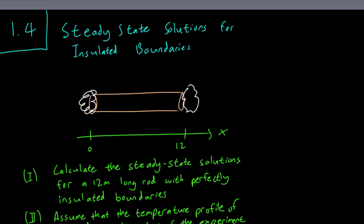Hello class, this is section 1.4 and in this video we are going to discuss steady state solutions for insulated boundaries. So this time we have again an iron rod, we say it's 12 meters long, and we've stuck some cotton wool on both sides of the rod so heat cannot leave or enter from the sides, from the left end or the right end.